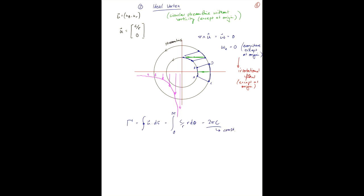So no matter how large a radius you pick here for your circulation, it's always 2 pi c. And that means it's just the circulation that happens at the origin.